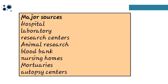Then there are major sources like secondary and tertiary hospitals where patients are more numerous and have rare conditions and traumatic injuries — generating a lot of anatomical waste, needles, and other materials. Laboratories are also major sources where blood samples, urine samples, stool samples, and sputum are all infectious. Other major sources include research centers, animal research, blood banks, nursing homes, mortuaries, and autopsy centers.